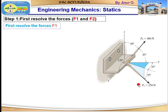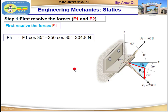F1 can first be resolved into F1z and Fh, where Fh is the projected vector of F1 in the xy-plane. F1z is the vertical component of F1. Using trigonometry, since 35 degrees is adjacent to Fh, Fh is equal to F1 cos 35 degrees.